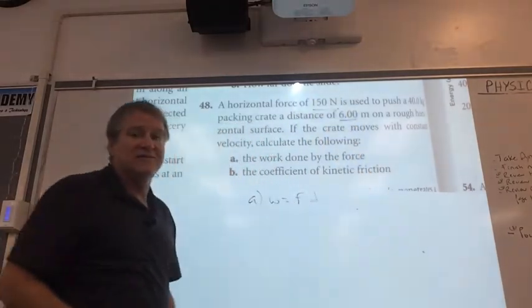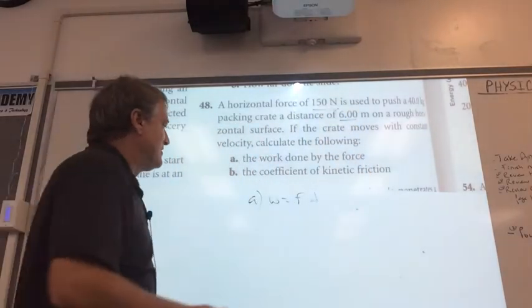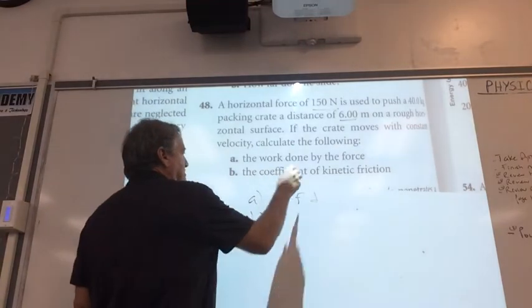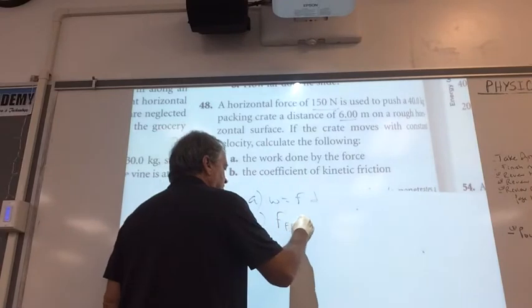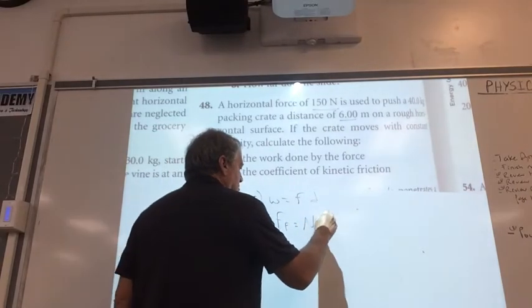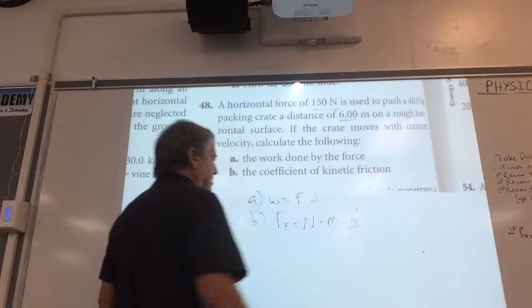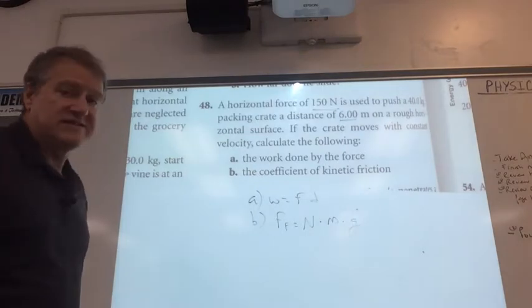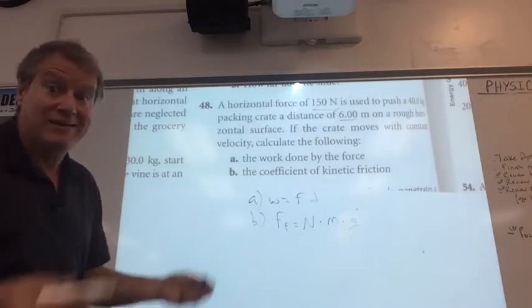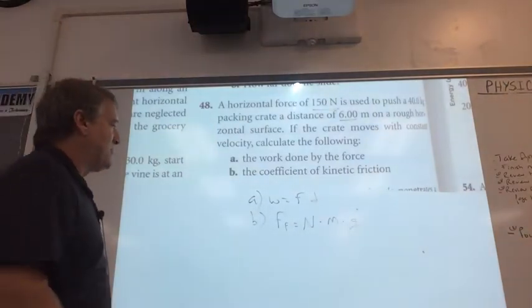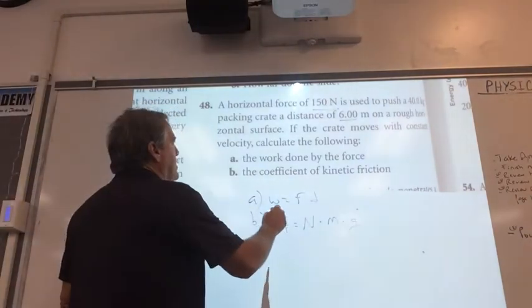All right, let's do part B, and that is what is the coefficient of kinetic friction. Well we know that the force of friction is equal to μ times the normal, which is mass times gravity. This is back from last chapter and I promised you we wouldn't get into it, but I lied. I forgot, okay? Don't kill me.